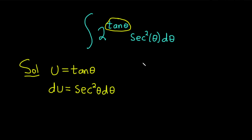And that is exactly what we have up here in our integral. So it works out perfect. Now we can just go ahead and rewrite our integral using these new variables. So it becomes the integral of 2 to the u. And then this whole piece here, secant squared theta d theta, well all of that is just equal to du.